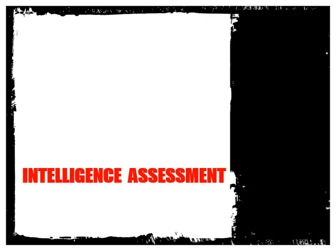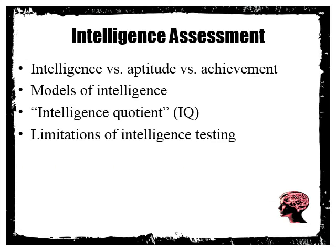We're going to begin with intelligence assessment. First, it's important to understand the difference between intelligence versus aptitude versus achievement testing. Then we'll learn about models of intelligence, learn about the intelligence quotient — what that is, IQ — and then learn about limitations of intelligence testing that are important to understand when you're reading a test result in regards to intelligence.